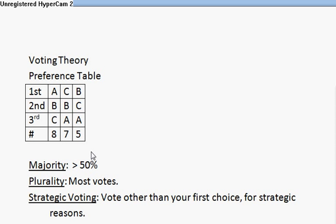For example, in this table, if we just put a name in a hat and vote like we often vote, A would get eight votes, C would get seven, and B would get five because people would vote their first choice. So clearly A would win. A does not have a majority — we have eight out of 20 votes — but A does have a plurality, so that would be a plurality win.